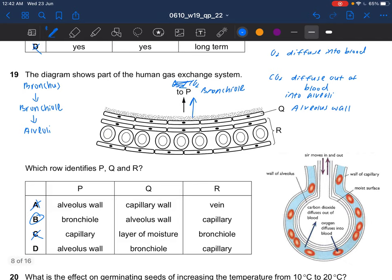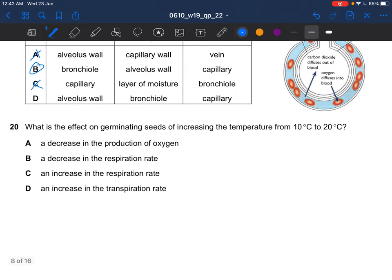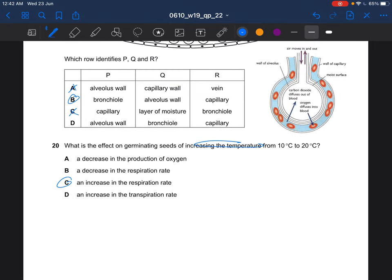Next question. What is the effect on germinating seeds of increasing the temperature from 10 degrees Celsius to 20 degrees Celsius? Increasing the temperature would increase the respiration rate. Decrease in production of oxygen? It would use up more oxygen but it doesn't decrease the production of oxygen. So the answer would be C, it's the most suitable answer.